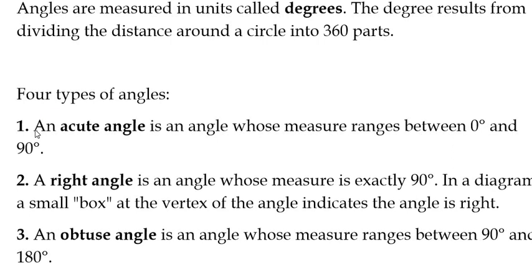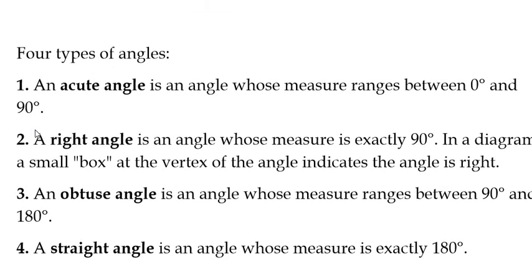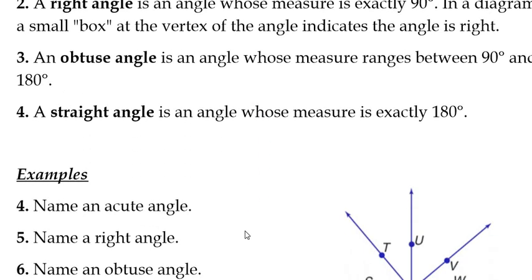There are four types of angles that we know of. We have an acute angle. That's an angle whose measure ranges between zero degrees and 90 degrees. A right angle is an angle whose measure is exactly 90 degrees. In a diagram, a small box at the vertex of the angle indicates that angle is a right angle. An obtuse angle is an angle whose measure ranges between 90 degrees and 180 degrees. And a straight angle is an angle whose measure is exactly 180 degrees.